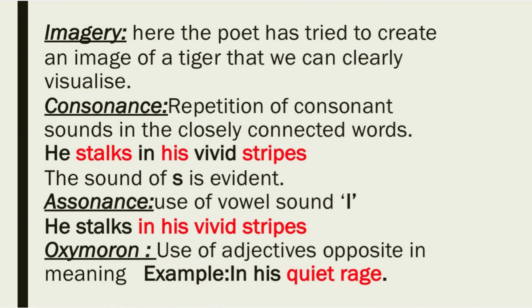Imagery — the poet has tried to create an image of the tiger that we can clearly visualize. Consonance — repetition of consonant sounds in closely connected words; for example, 'He stalks in his vivid stripes' — the sound of 's' is evident in 'stalks,' 'his,' and 'stripes.' Assonance — use of vowel sound 'i' in the line 'He stalks in his vivid stripes.' Oxymoron — use of adjectives opposite in meaning; in the last line, 'quiet rage' — 'quiet' and 'rage' are opposite in meaning.